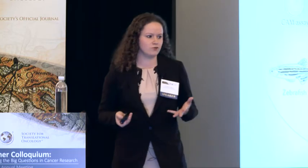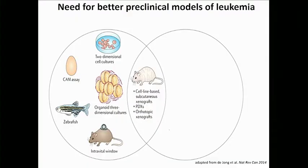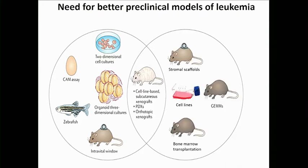Historically, the scientific community has used a number of different in vitro and in vivo models to study their favorite disease, gene, or pathway. In leukemia, we've focused for decades on cell line models that grow on plastic and can become cytokine independent if you perturb them with a particular oncogene or loss of a tumor suppressor gene. We've also studied extensively different genetically engineered mouse models, and more recently people have developed stromal scaffold models as well as PDX models.